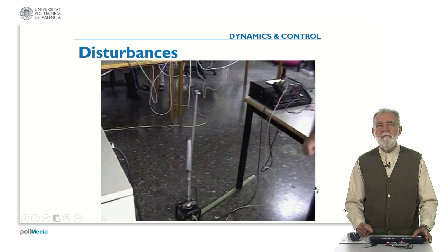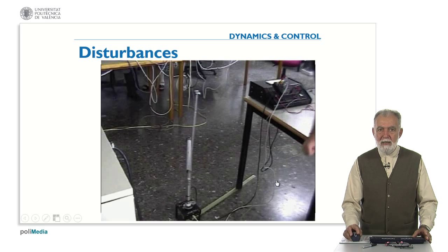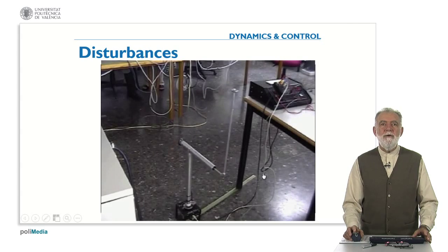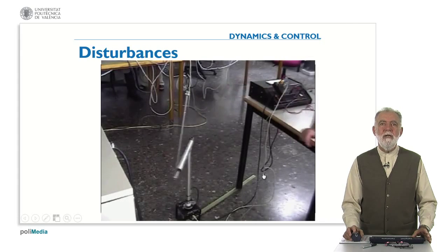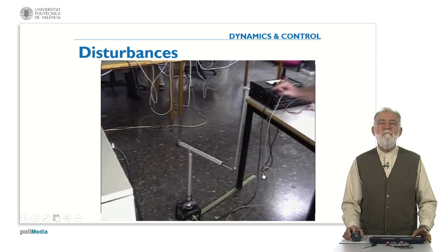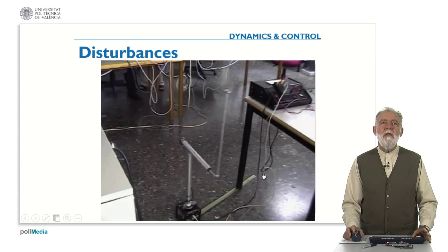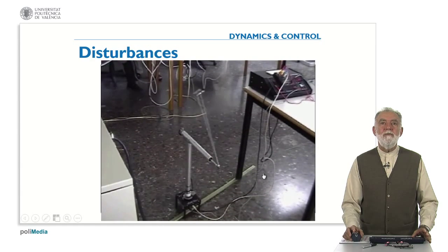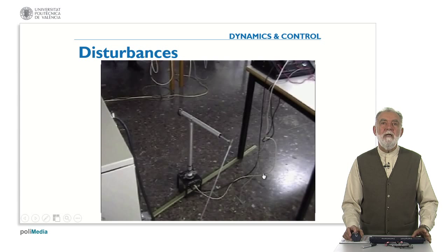In the case of the inverted pendulum, we know this pendulum is unstable. First of all, we want to stabilize it, but also we want to reduce the effect of disturbances. Here it is more or less in a steady state position, and then we apply a disturbance, and the system recovers. Of course, if the disturbance is very, very strong, we could go out of the range of operation and the system will be destabilized. Also, if we cancel the control, we will see that the system, being unstable, goes down from the steady position.